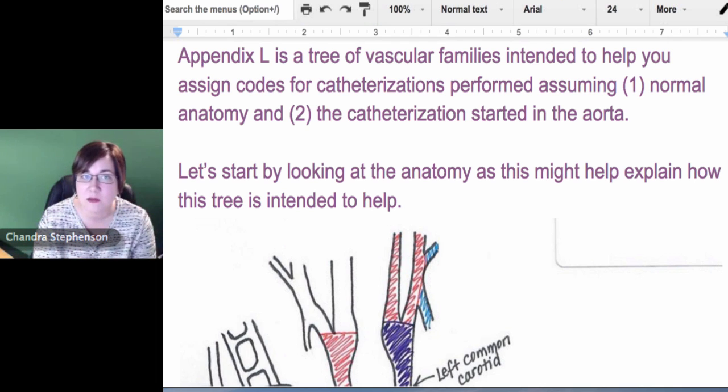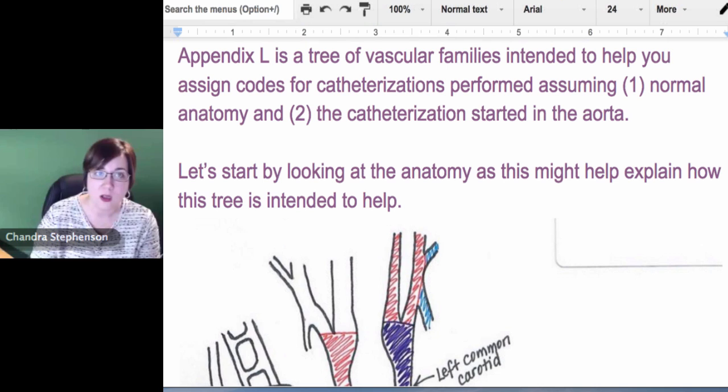The thing it doesn't go on to say - there's an assumption that the patient has normal anatomy. Now I'll be honest with you, on the CPC exam, on the COC exam, on those core credentials, they are not going to give you a patient who has abnormal anatomy. The only time you're going to start seeing abnormal anatomy is if you get into like that CERC exam, the certified interventional radiology and cardiology coder, because they're coding a lot of cardiac caths and there are patients that have variant arch anomalies. But don't worry about those for these purposes.